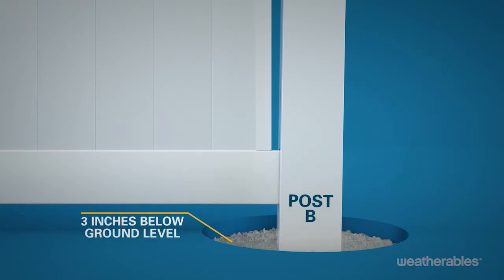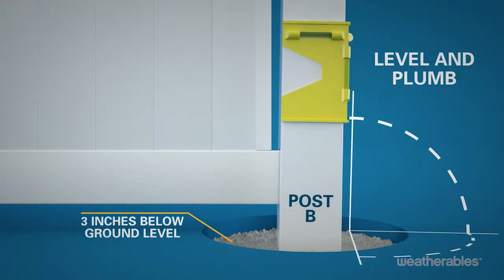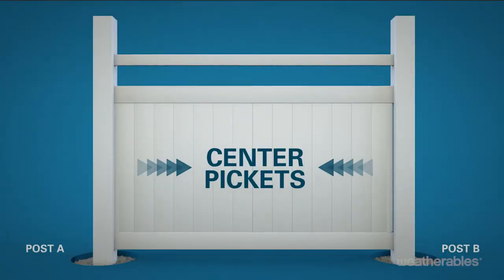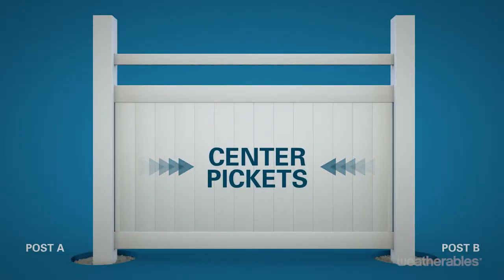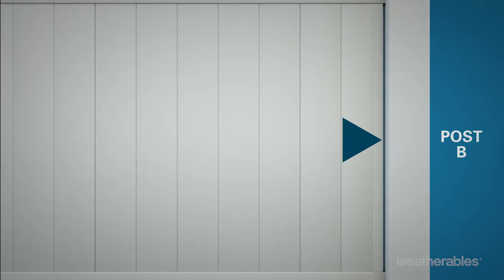Pour concrete around post B to about 3 inches below ground level, level, and plumb. Center the pickets between the rails. If there's a small gap at either end, position the U channels to cover any gaps.